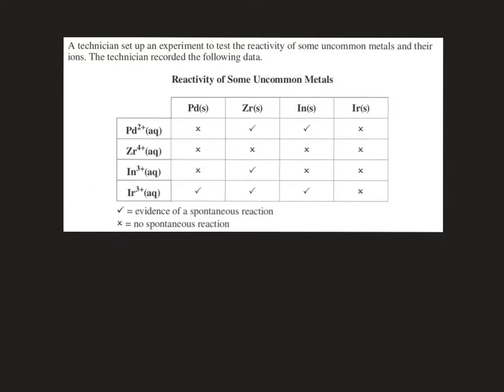What we see here is a pretty typical example. A technician set up an experiment to test the reactivity of some uncommon metals and their ions. The technician recorded the following data. If we look at this table across the top row we have solid metals: palladium, zirconium, indium, and iridium.